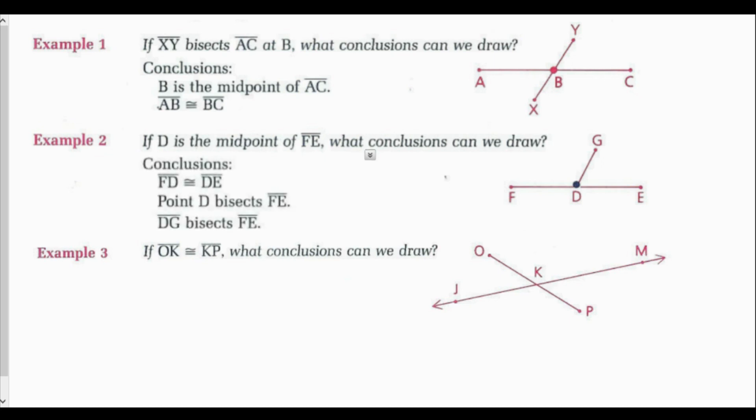Last example: if line segment OK is congruent to line segment KP, what conclusions can we draw? If these two segments are congruent, then the point in the middle would be the midpoint, so K is the midpoint of line segment OP, line JM is a bisector of line OP, and point K bisects line segment OP.